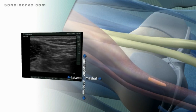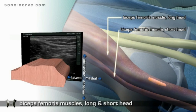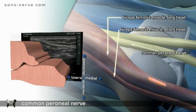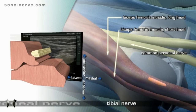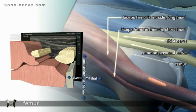Anatomy: long head and short head of the biceps femoris muscle, common peroneal nerve, tibial nerve, femur.